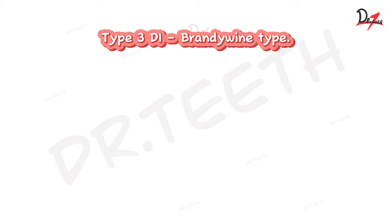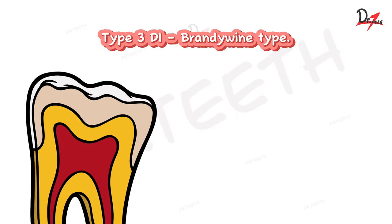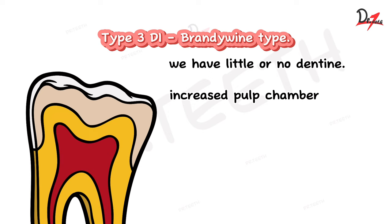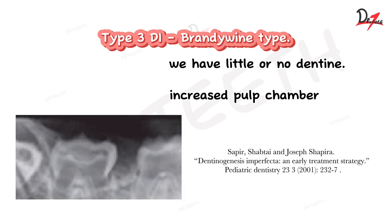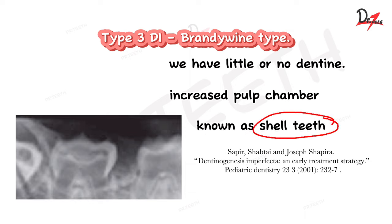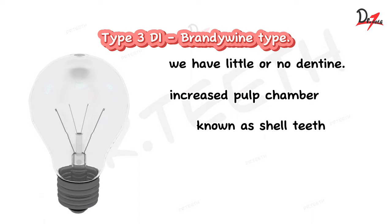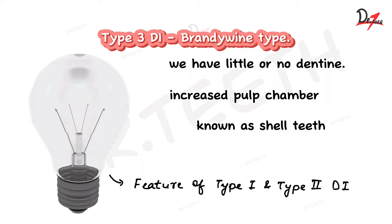Type three is the Bradyvine type and is very different from type one and two, because in this we have little or no dentine. In type one and two there was a lot of dentine causing a constricted pulp, but in type three there is little dentine and therefore an increased pulp chamber — the opposite. This gives a shell-like appearance on radiograph, which is why type three is known as shell teeth. In type one and two, we have a bulb or bell-shaped crown — the tooth appears to constrict as it goes downward, resembling a bulb or tulip shape.